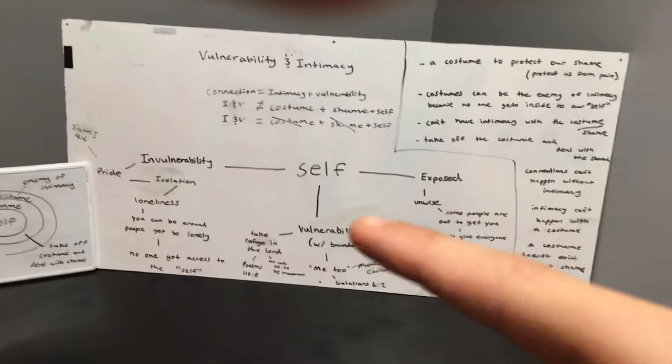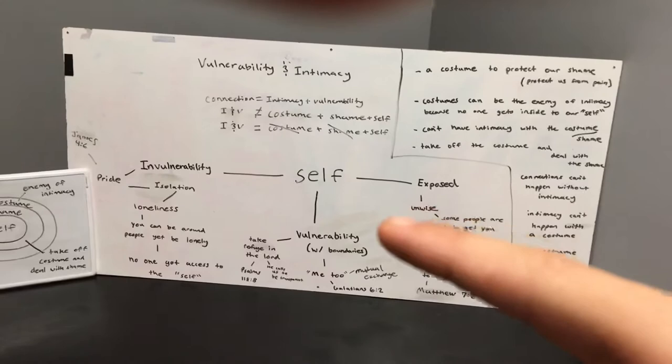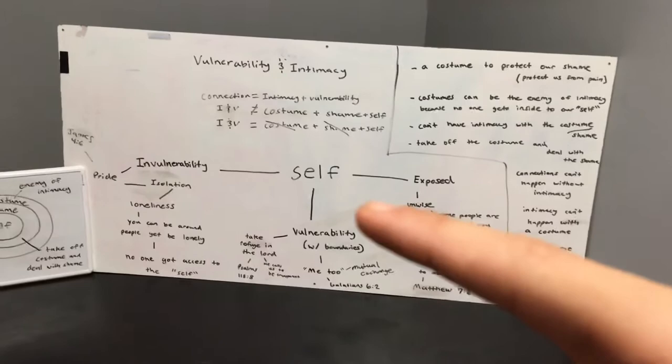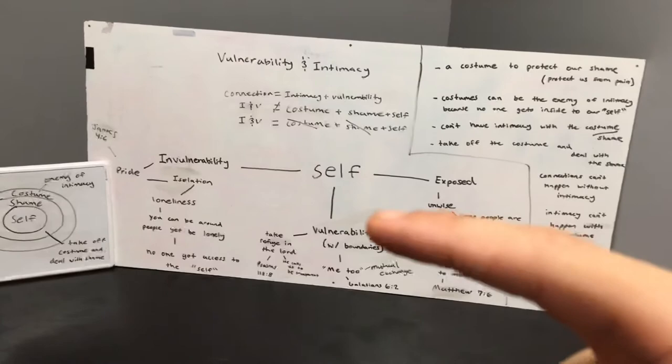Keep that in mind when you're on this side. But we're trying to get over here to vulnerability with boundaries—this is the happy medium. So how do we do this? The first way is to take refuge in the Lord. Psalms 118:8 says it is better to take refuge in the Lord than to trust humans.